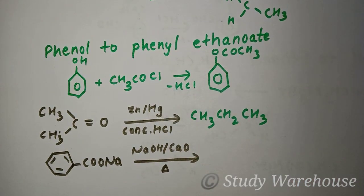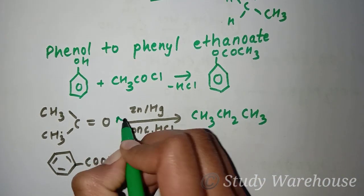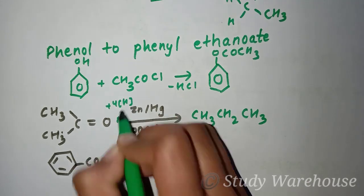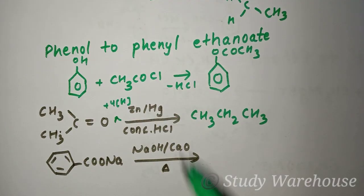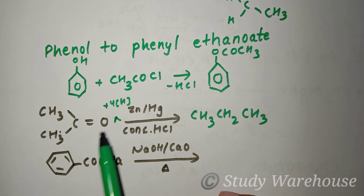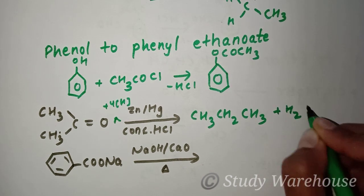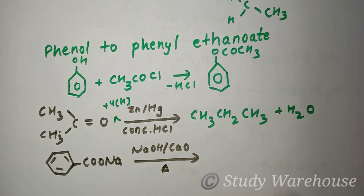Here which will change is CH3CH2CH3, which is propane, because this is a reduction. Here is 4H which means reduction. You have to see zinc with amalgam and concentrated HCl, which means this will reduce to an alkane. Here double bond O will be removed and H2 will be added, which means product is propane.